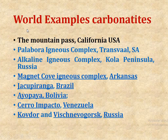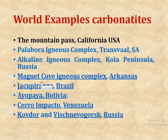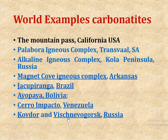Some famous world examples of carbonatite complexes include: Mountain Pass, California, USA; Palabora igneous complex of Transvaal, South Africa; alkaline igneous complex of Kola Peninsula, Russia; Magnet Cove igneous complex of Arkansas; Jacupiranga, Brazil; Ayopaya, Bolivia; Cerro Impacto, Venezuela; and Kovdor and Vishnevye Gory, Russia.